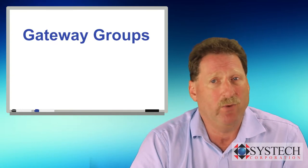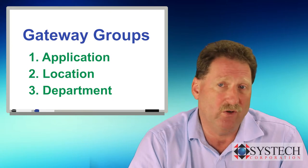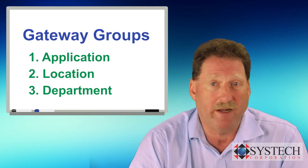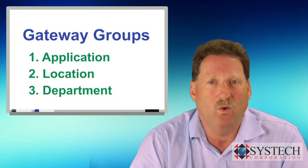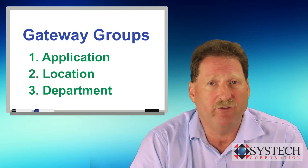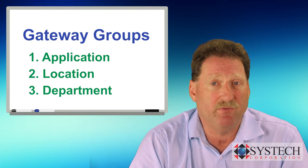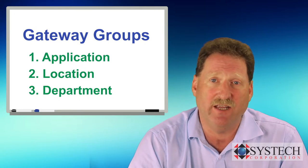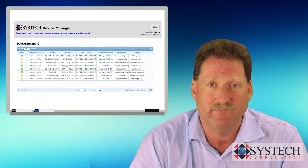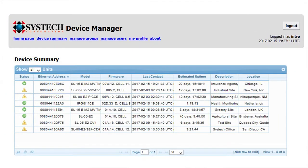For example, gateways may be grouped by application type, or physical location, or by department, or by whatever makes sense. One or more managers can be authorized to access various groups of gateways, which provides a high degree of control of who can access and control various gateways. Here's an example view of various gateways accessible by an authorized manager.